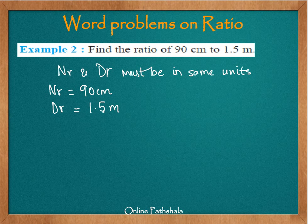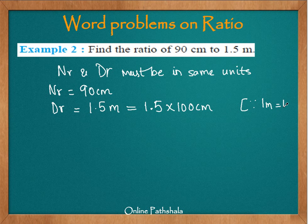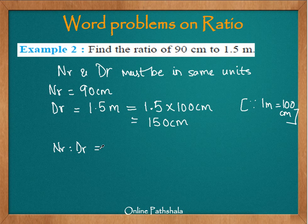We need to convert 1.5 meters into centimeters so that both quantities are in the same units. Since one meter equals 100 centimeters, 1.5 multiplied by 100 equals 150 centimeters. Now the ratio is simply 90 over 150, which we need to simplify further.